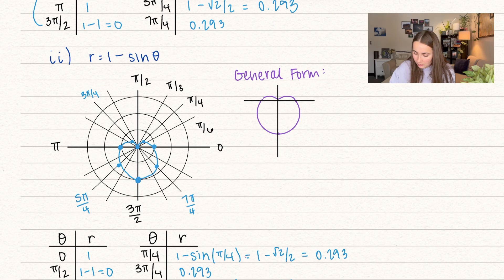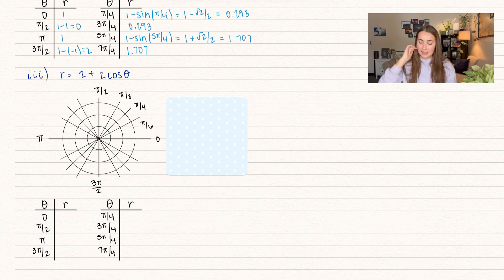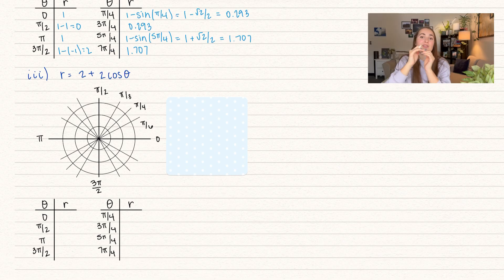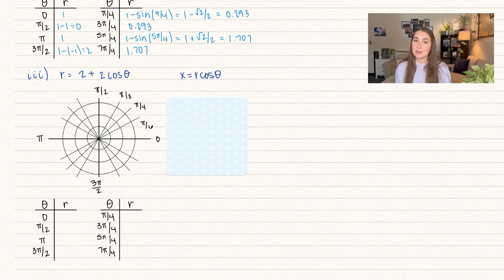The general form r equals a minus a sine of theta still opens on the y axis, but now instead of going up, it goes downward because we're subtracting. Now let's see what happens when we change this to cosine. With 2 plus 2 cosine theta, I know it's a cardioid because the coefficient matches. Remember that x equals r cosine of theta, so when you see cosine theta, think about the x direction.